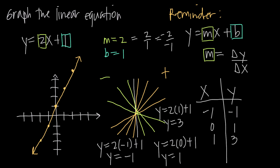We can plot these points and connect them to form the line. The point negative 1, negative 1: we go left 1 unit along the x-axis and down 1 unit along the y-axis. The point 0, 1: we start at 0 for x and go up to 1 for y. The point 1, 3: we go out to 1 along the x-axis and up to 3 along the y-axis. So instead of using the y-intercept and slope, we could have just found coordinate points and used those to graph the line. Either way, both methods will work — those are two methods you can use for graphing a linear equation.